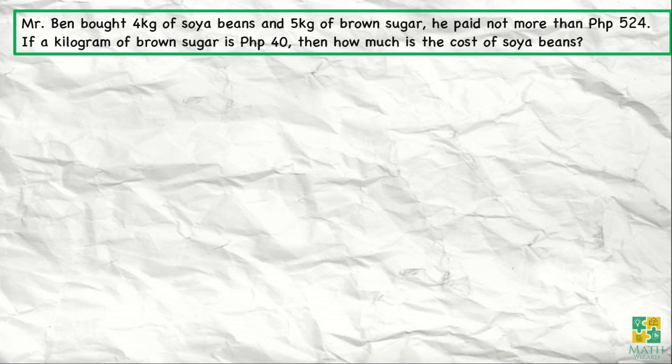Mr. Ben bought 4 kilograms of soya beans and 5 kilograms of brown sugar. He paid not more than 524 pesos. If a kilogram of brown sugar is 40 pesos, then how much is the cost of soya beans?